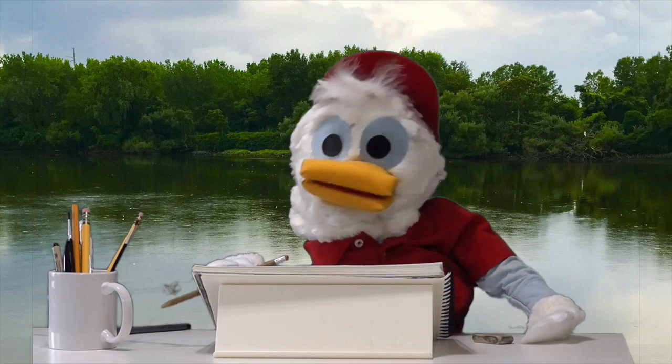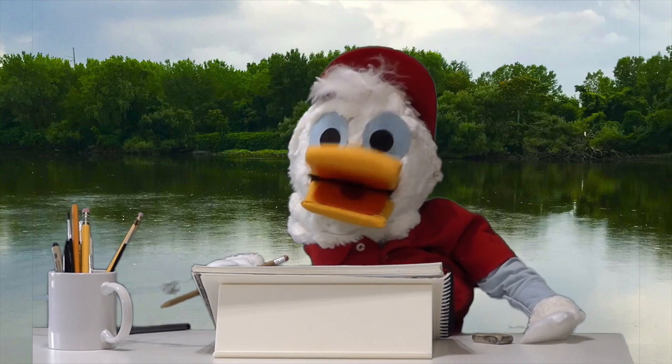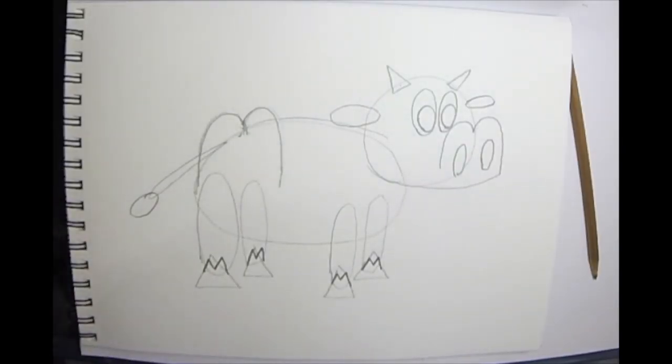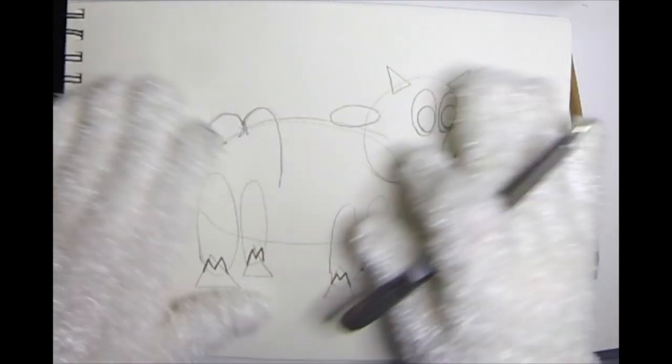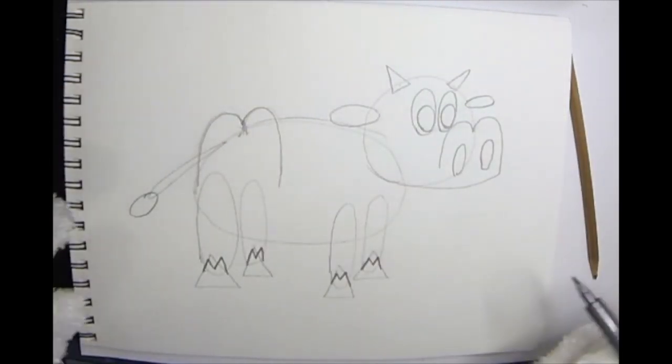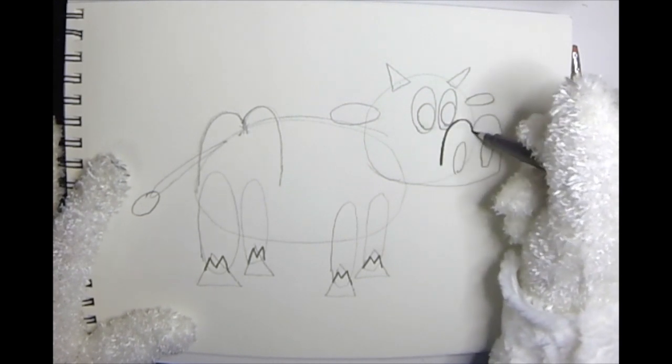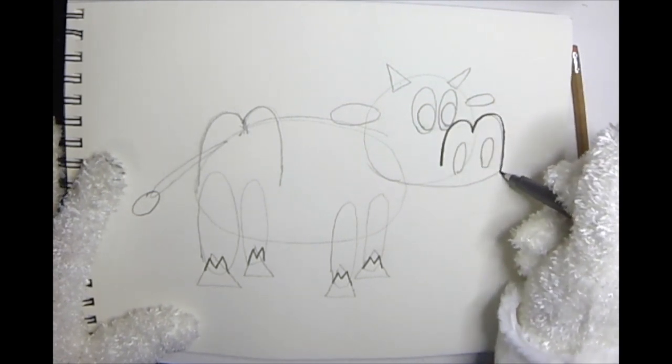Now, like usual, we're going to go over it with a black marker so our lines are nice and dark. All right. Let me take the cap off here. There we have it. All right. So I'm just going to start by going right over some of my pencil lines. But remember, we can always change things up a little bit during this step. Pencils are a guide.